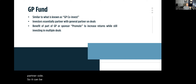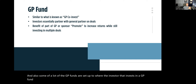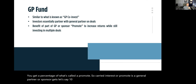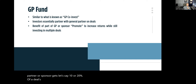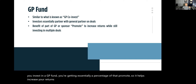You're kind of a partner with the general partner on deals, although you don't have any management or control. But you're getting some of the benefits of investing on the general partner side, which can be more attractive to investors. Many GP funds are set up so that the investor gets a percentage of what's called a promote. Carried interest or promote is when a general partner gets, say, 10 or 20% of a deal's profit as their fee for putting the deal together. If you invest in a GP fund, you're getting a percentage of that promote, which helps increase your returns.